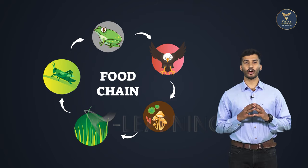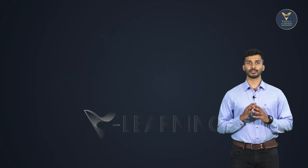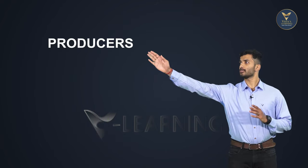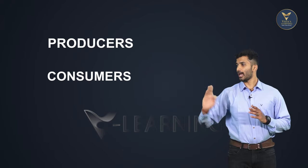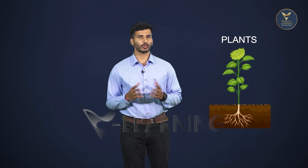To understand this process much better, we can categorize organisms into three categories: they are producers, consumers, and decomposers. The food chain starts with plants.